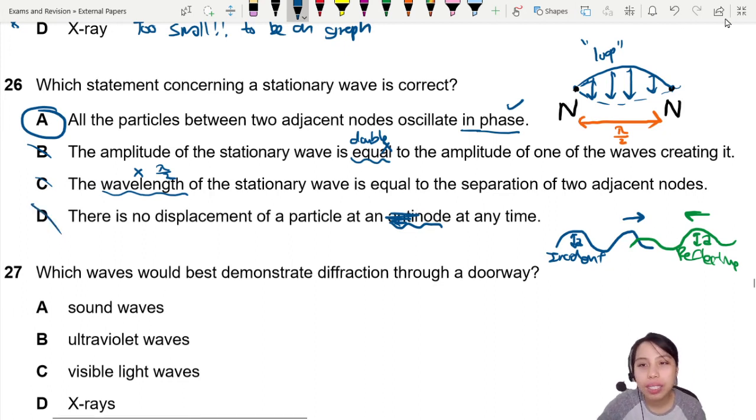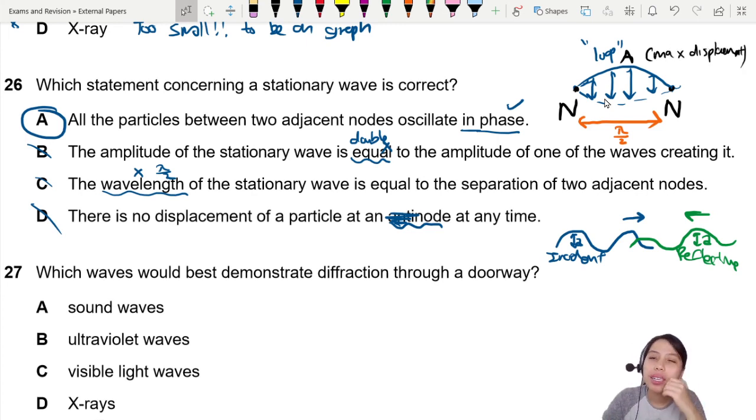So at the nodes, if you look at this little diagram here, the particle is not going to move, correct? Anti-node is where? Anti-node is in between, so this point. Particle is going to be moving up and down with maximum displacement. Max displacement, or in other words, amplitude. This one, no displacement at all. It's just going to chill there.